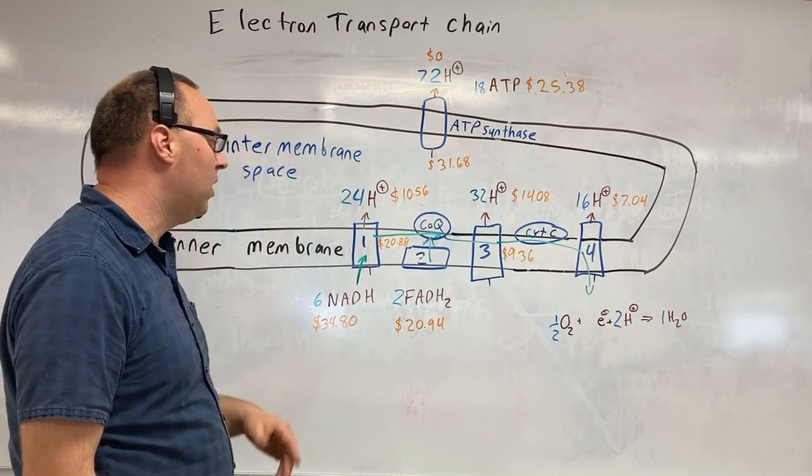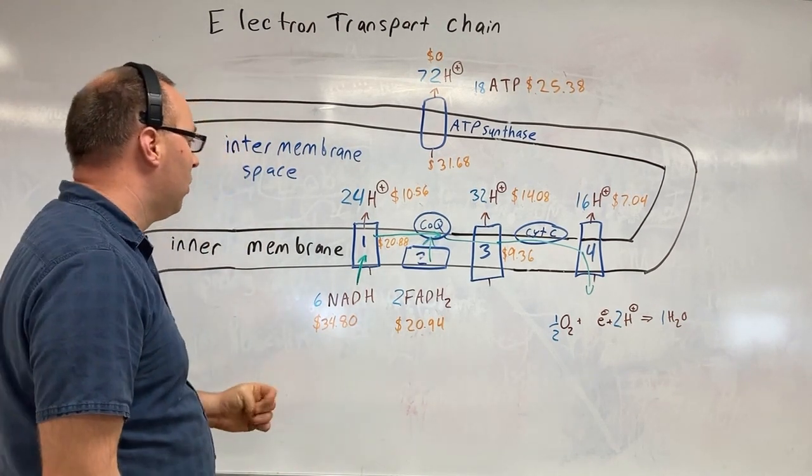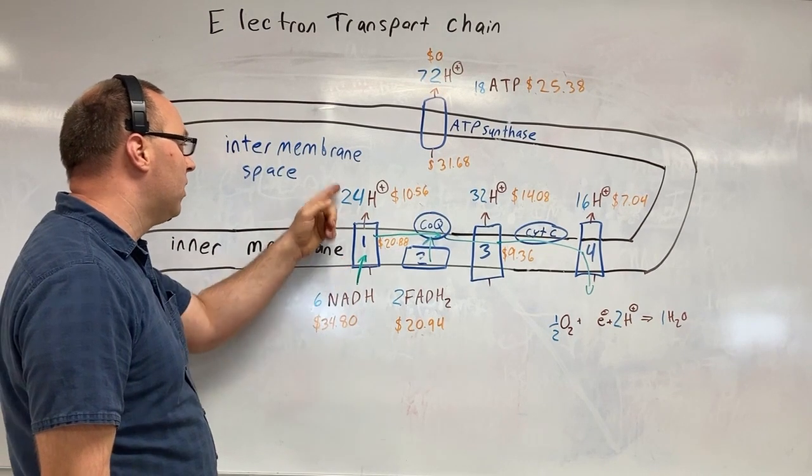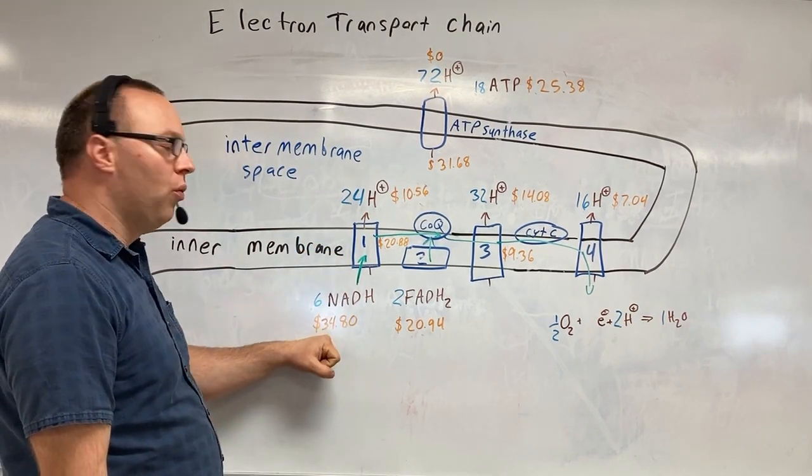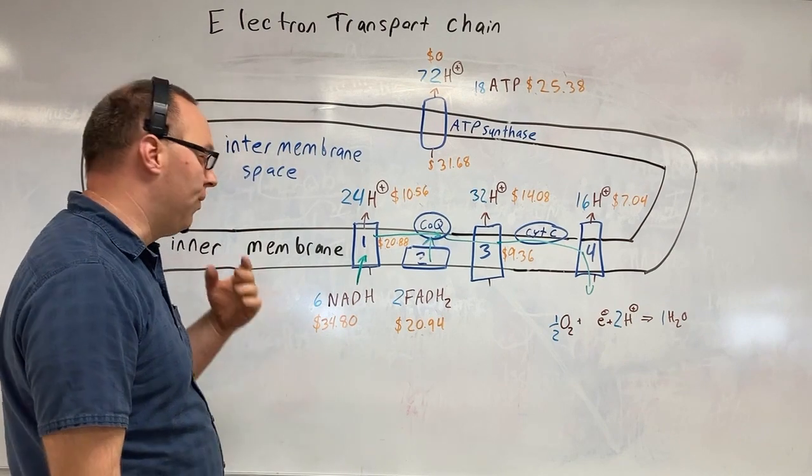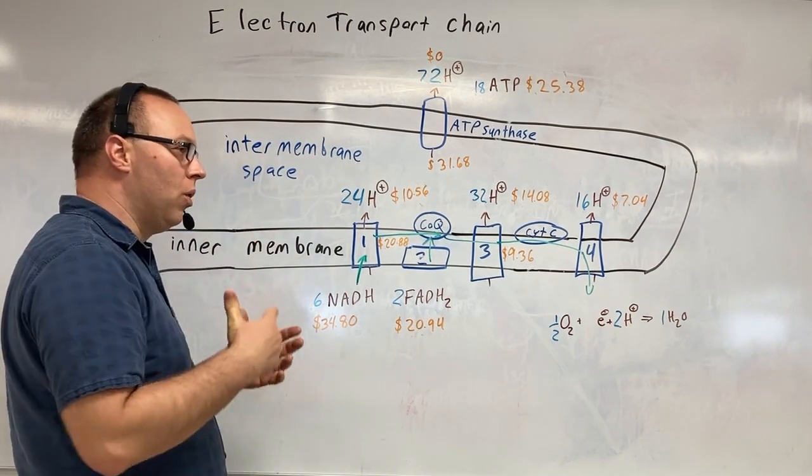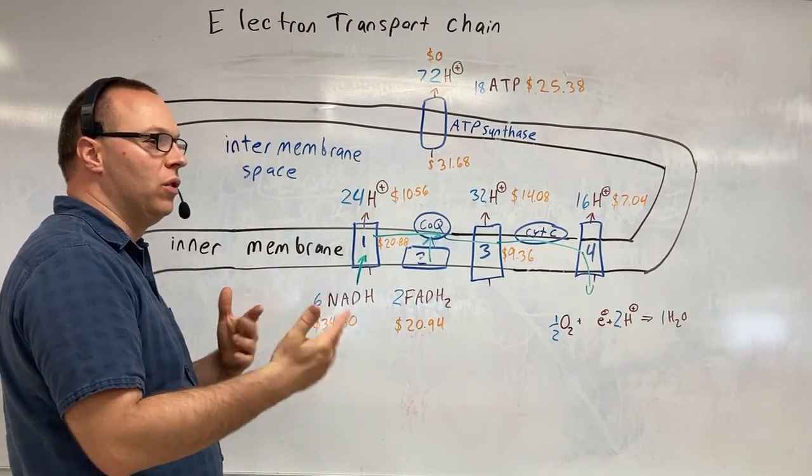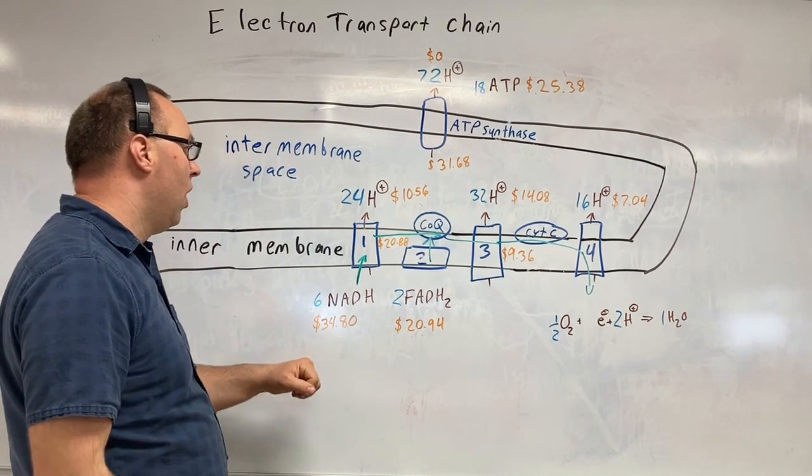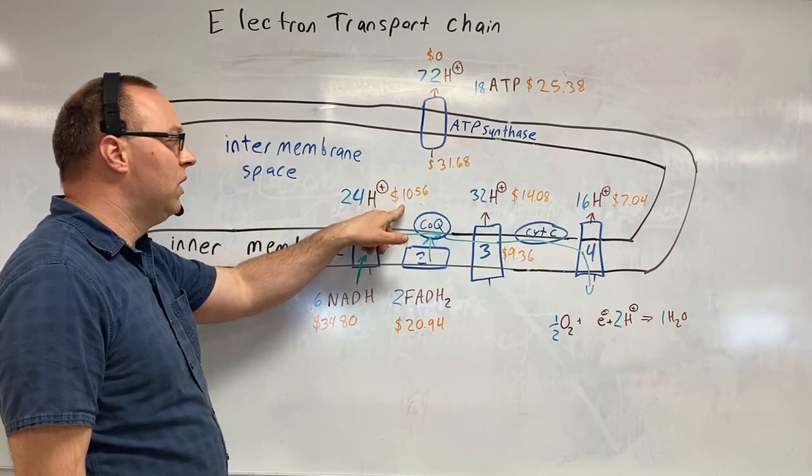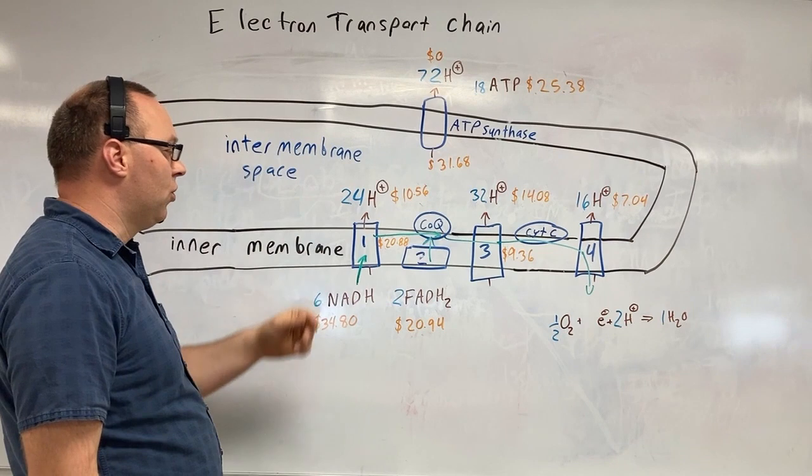we walk away with a different understanding here. What's going to happen is this first complex is going to pump up 24 hydrogen. About $34.80 worth of energy still left in glucose. Of the $100 worth of energy that was in the form of glucose, we're only putting $10.56 of it with this first complex.